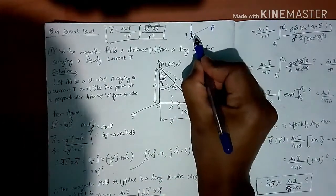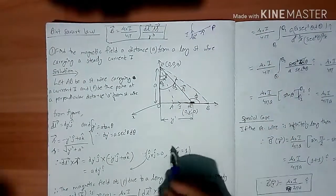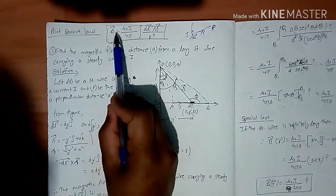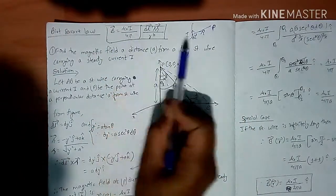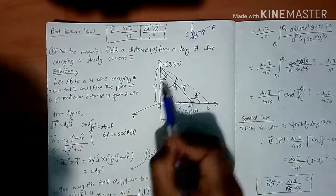dL length considered as a small dL length, this distance is R. This is the magnetic field, magnetic field is just mu not i divided by 4 pi, integration in dL length.